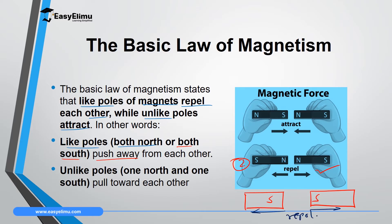When we talk about unlike poles, it means you have one north pole and one south pole close to each other, as in the first diagram on screen. In this case, they will pull each other, and in the language of magnetism, we say they attract. So the basic law of magnetism states that like poles repel each other, while unlike poles attract each other.